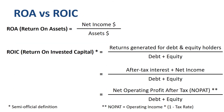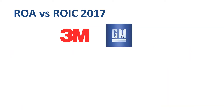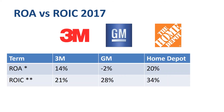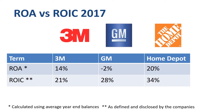If you compare ROIC to ROA, the numerator in the ROIC equation is higher and the denominator is lower. So in total, the outcome of the ROIC calculation should always be higher than the outcome of the ROA calculation. Let's test that for three companies — 3M, General Motors, and Home Depot. ROA for 3M is 14%, ROIC is 21%. ROA for GM is minus 2%, ROIC is 28%. ROA for Home Depot is 20%, ROIC is 34%.